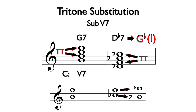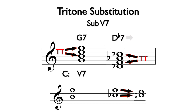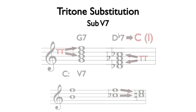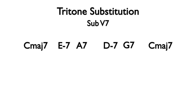If the Db7 chord resolves down a half-step instead, the tritone interval resolves in the opposite fashion, bringing us to a one chord in C. The easy way to use a tritone substitution in a composition is to replace a primary or secondary dominant, completing a typical resolution down a fifth, with a dominant chord a tritone away. This chord can be found a half-step above its chord of resolution.